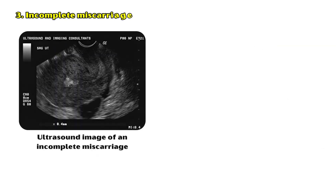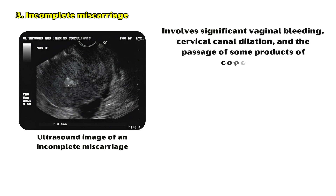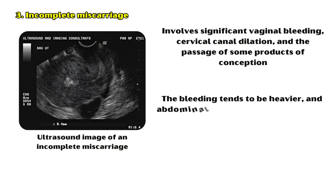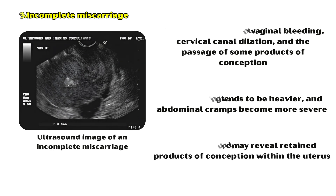Incomplete miscarriage: This stage involves significant vaginal bleeding, cervical canal dilation, and the passage of some products of conception. The bleeding tends to be heavier, and abdominal cramps become more severe. An ultrasound may reveal retained products of conception within the uterus.